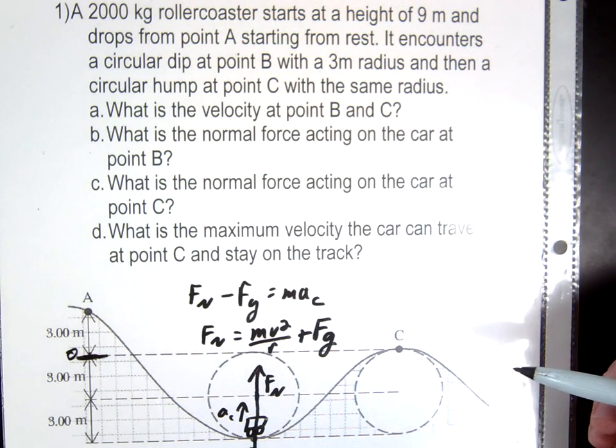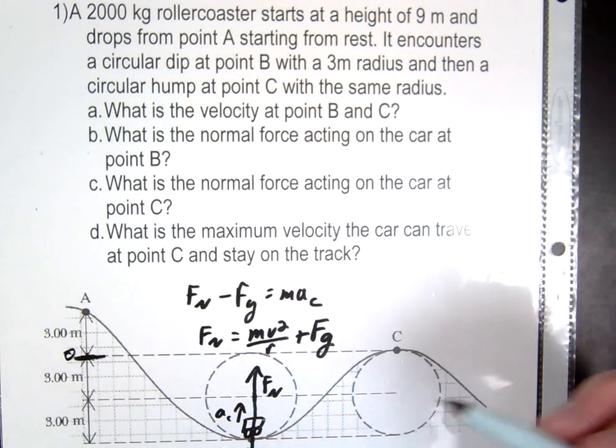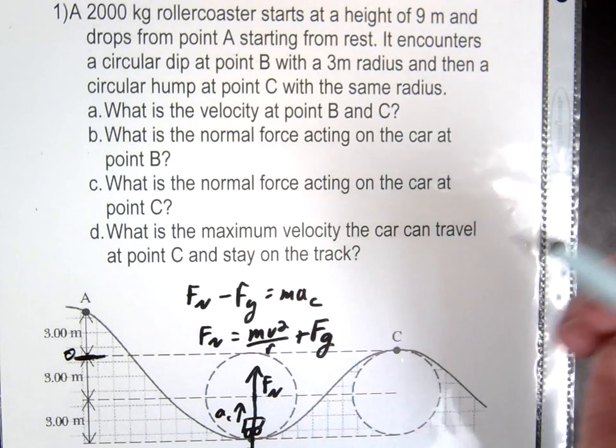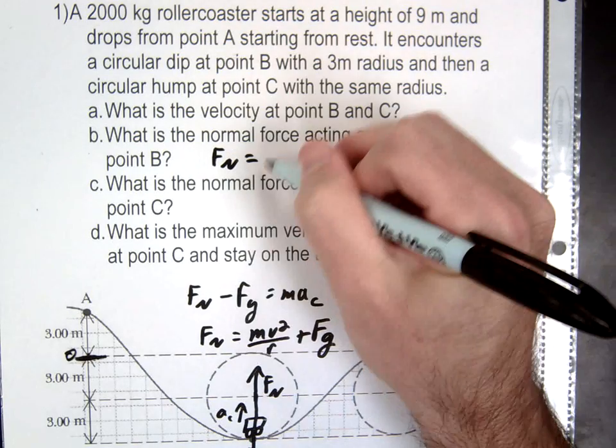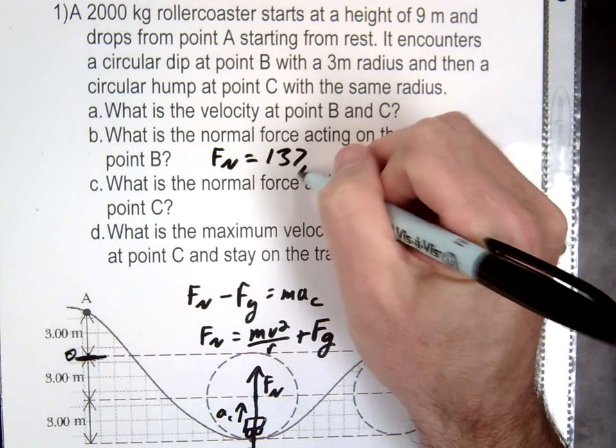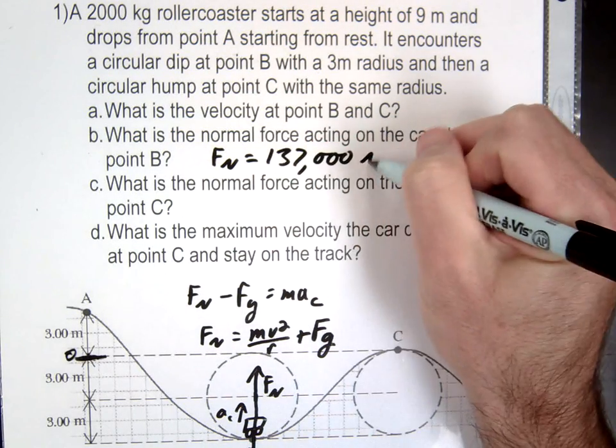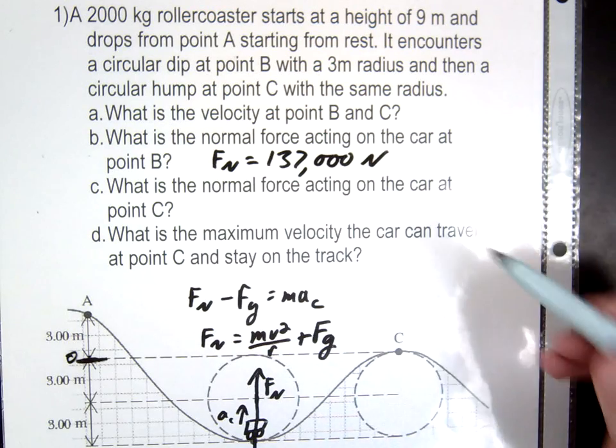Alright, so I'm not going to bother to plug in the numbers. I think you guys can do that. What's the answer then for letter B? 137,000. 137? Yeah. Is that confirmed to three digits?